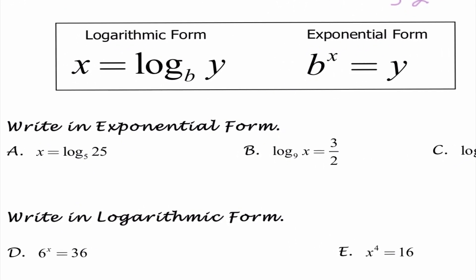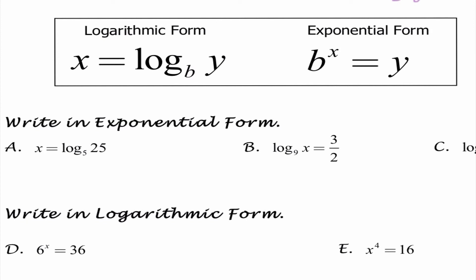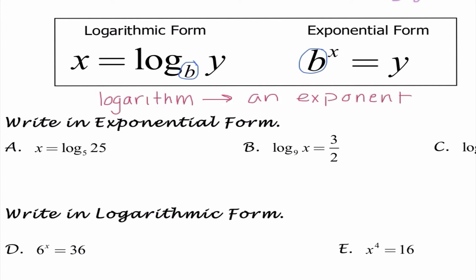This box is something you definitely need to have memorized. We need to know how to change back and forth from logarithmic form into exponential form. The first thing I look for is the base — base is the same in both forms. The base in logarithmic form is my subscript; the base in exponential form is whatever I'm taking to the exponent. A logarithm is just an exponent, so whatever the exponent is, that's what we set our logarithm equal to. The other value is what we get when we take the base to the power. That is a humongous concept for this chapter.